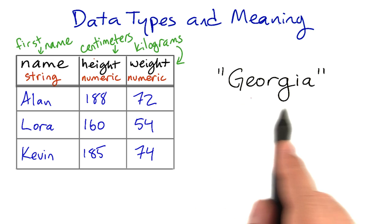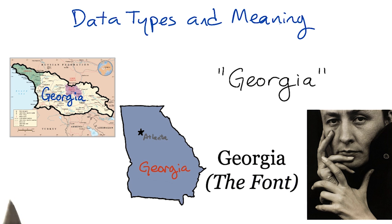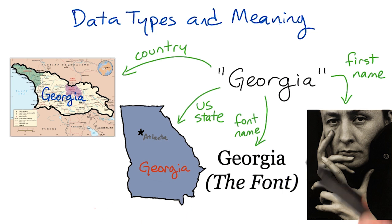Here's another example. Georgia is a string, a piece of text. But a string that represents the name of a country, like Georgia, does not have the same kind of meaning as a string that represents a US state, like Georgia, or the font Georgia, or someone's first name, like Georgia O'Keeffe.